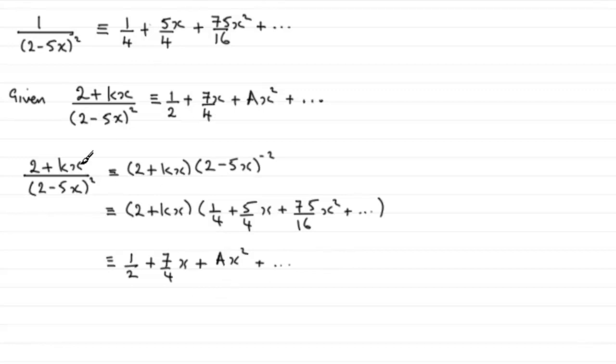Now, to get these values for k and a, to get k, all I need to do is look at the coefficients of x, the values in front of x, and you can see that the final value is 7 quarters. But if we were to expand this, looking for the coefficient of x, let's just put it down here. If we look at the coefficient of x, what are we going to get? Where are we going to get those x terms?